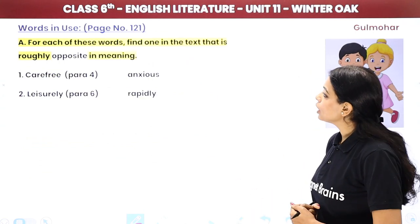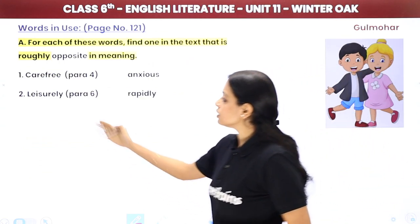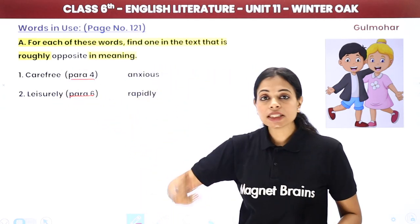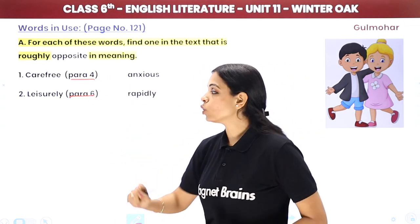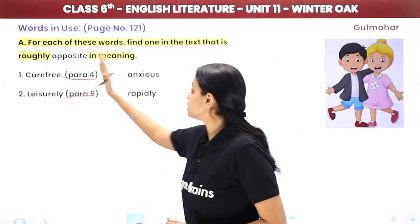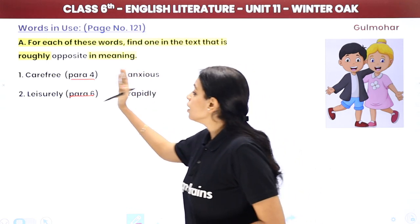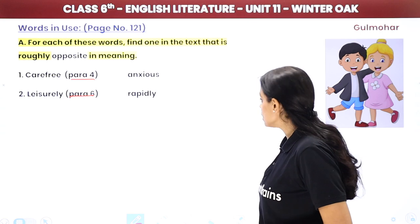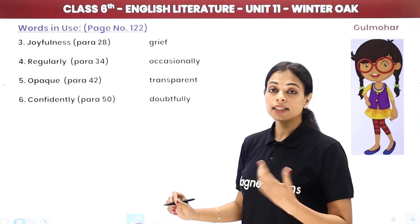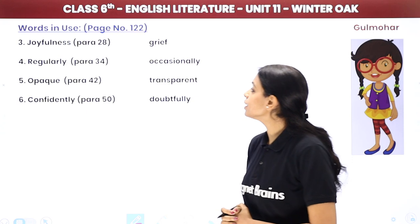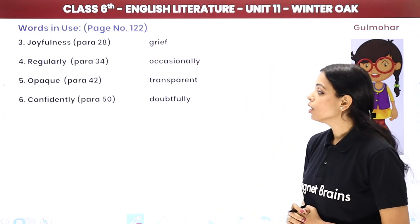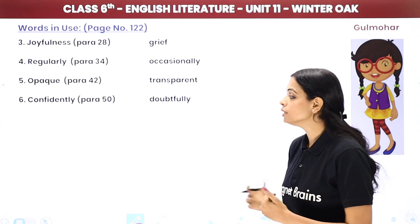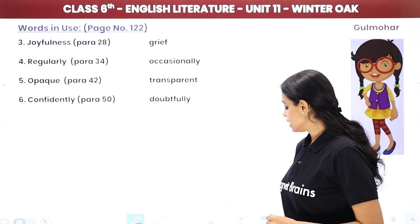Next, you are given words and asked for their opposites as found in the paragraph. Carefree — opposite is anxious. Leisurely (aram se) — opposite is rapidly. Joyfulness — opposite is grief. Regularly — opposite is occasionally. Opaque — opposite is transparent. Confidently — opposite is doubtfully.